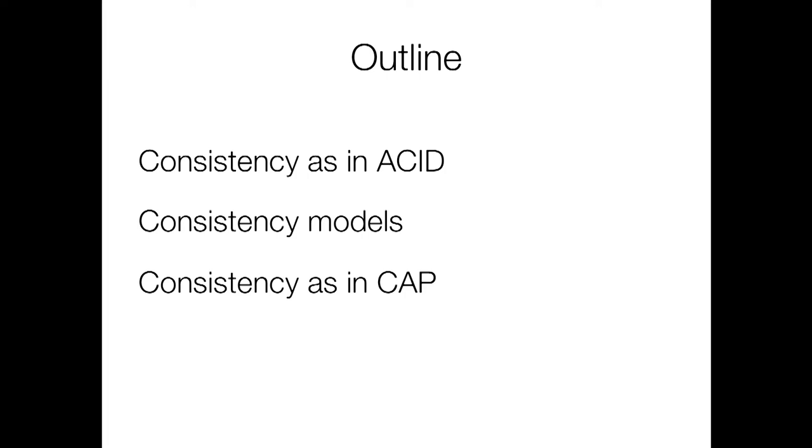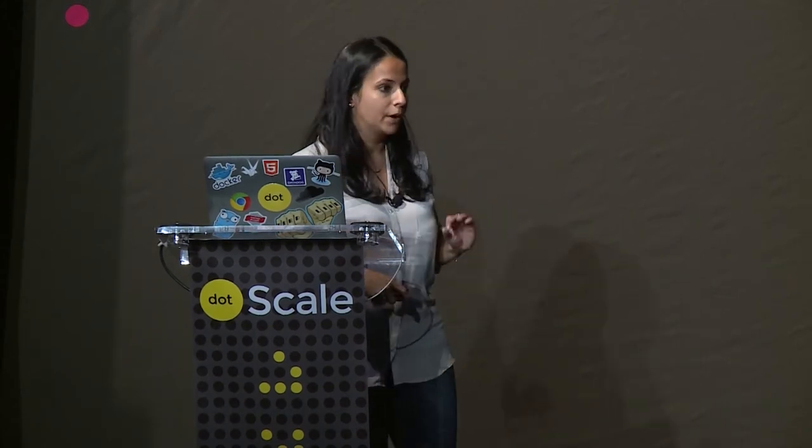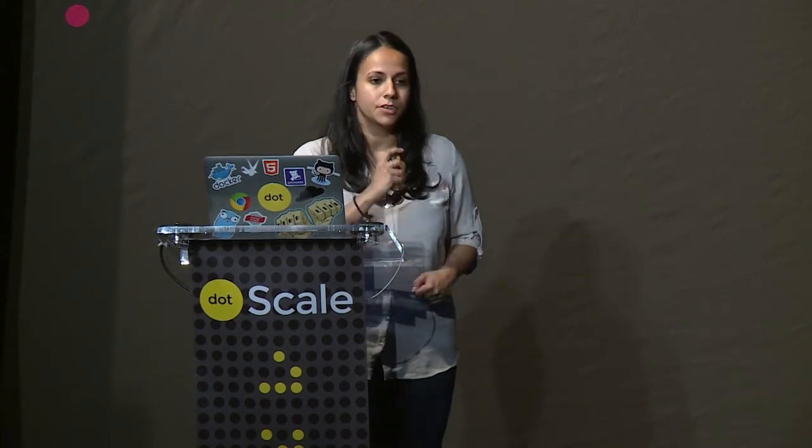First, there's consistency as the C in ACID with database transactions. There are consistency models — there are many of them, some of them incomparable. And then I'm going to talk about exactly what that C means in the CAP theorem, which we've already heard about today. So let's start with the first one.